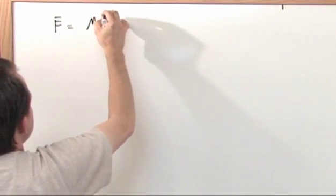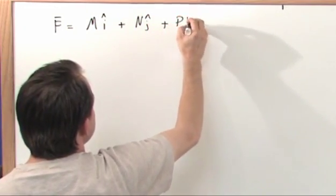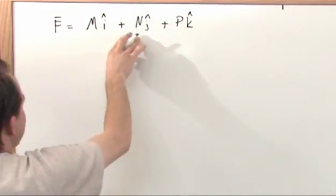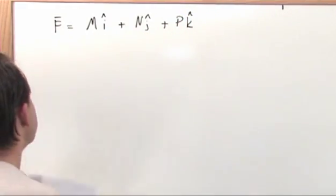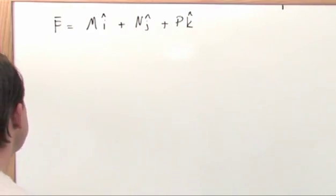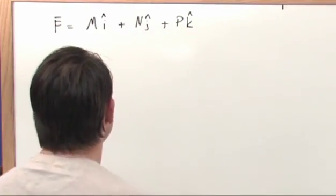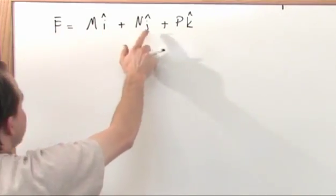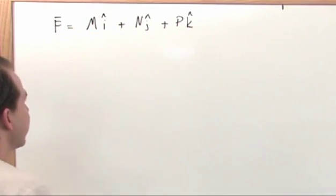You can write a vector field in the following way: some M in the I direction plus some N in the J direction plus some P in the K direction. Don't be scared by the M, the N, and the P. All it means is M is really a function of X, Y, and Z. N is a function of X, Y, and Z, and P is a function of X, Y, and Z. So what we're really saying here is a vector field has an I and a J and a K direction, and every little component is a function of three-dimensional space.